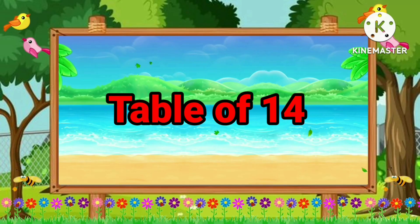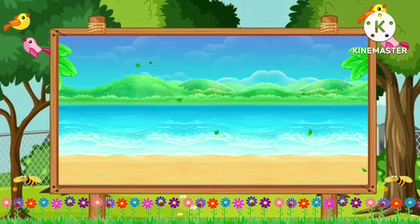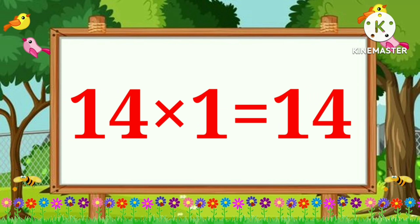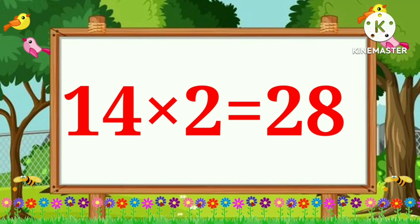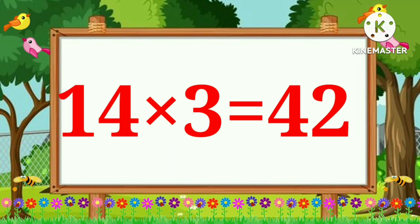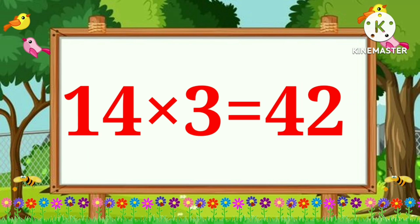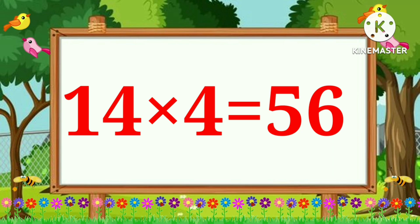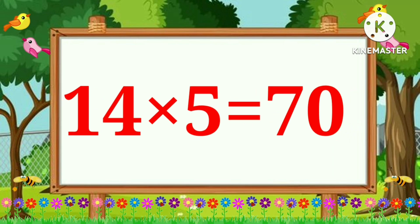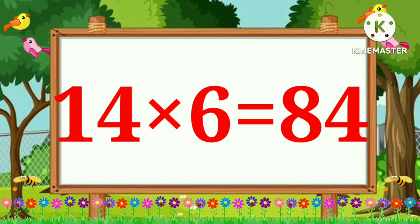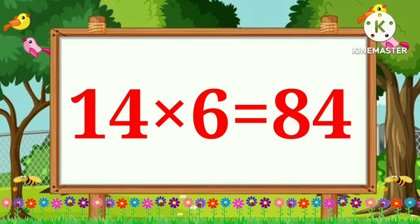Table of Fourteen. 14 1 is 14. 14 2 is 28. 14 3 is 42. 14 4 is 56. 14 5 is 70. 14 6 is 84.